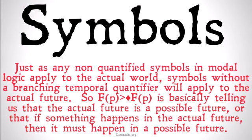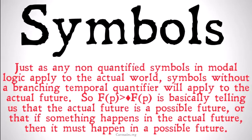Just as any non-quantified symbols in modal logic apply to the actual world, symbols without a branching temporal quantifier will apply to the actual future. So, 'FP implies diamond FP' is basically telling us that the actual future is a possible future — that if something happens in the actual future, then it must happen in a possible future. This is comparable to saying that the actual world is a possible world. Check out the alethic modal logic videos if you're curious.